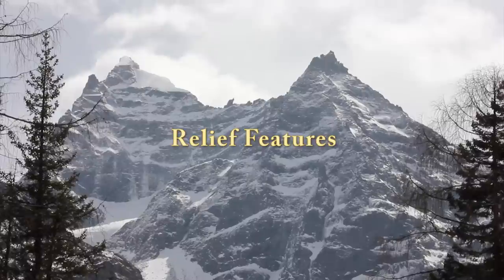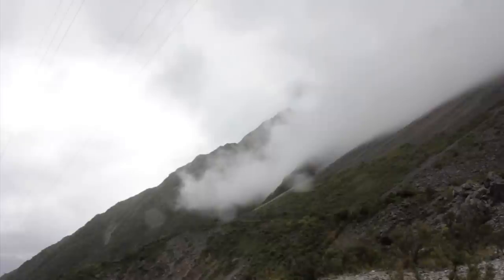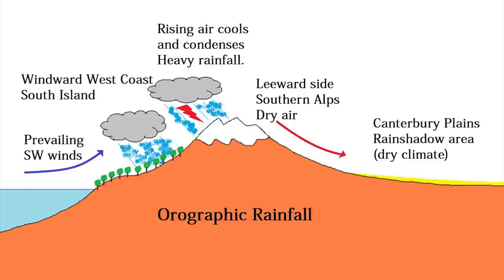Mountains can also influence climate in other ways. For example they can produce what is known as orographic rainfall. This occurs when moist air is forced to rise over mountains. The windward side of the mountain will have a wet climate while the sheltered side usually has a drier climate. We call this the rain shadow area.